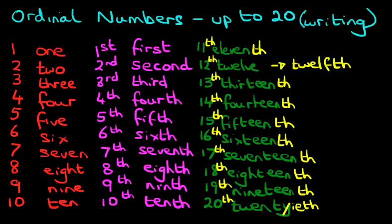So those are all the ordinal numbers from 11th to 20th. All of them have got th at the end. The only ones which change are 12th — if you say it correctly, you write it down as you say it, so practice saying it: 12th. And lastly, we've got 20th — you're writing 20th the way you say it. Now I want you to practice writing down all the ordinal numbers from first to 20th, and try to write them down once, twice, or even better, three times.